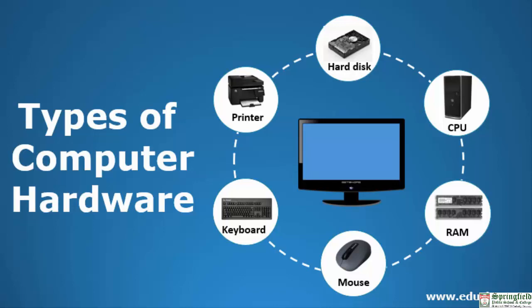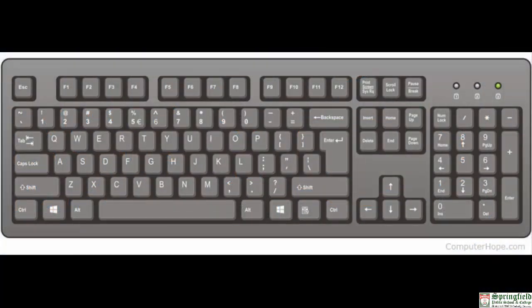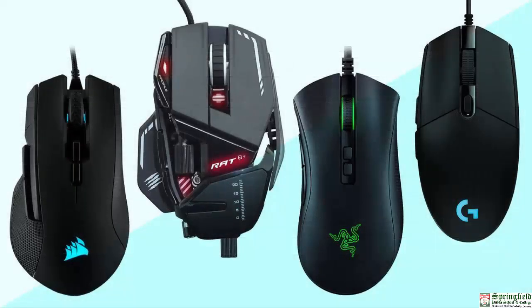First, the keyboard — it is the main input device used to communicate with the computer. It allows the user to enter letters, numbers, and special symbols. The mouse is a handheld device used to control the movement of the cursor or pointer on the screen. It has two or three buttons that allow the user to make selections in menus.